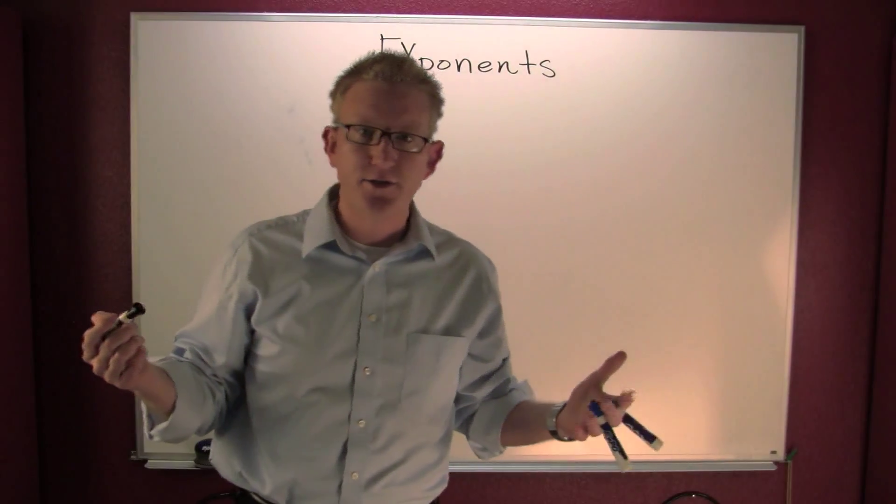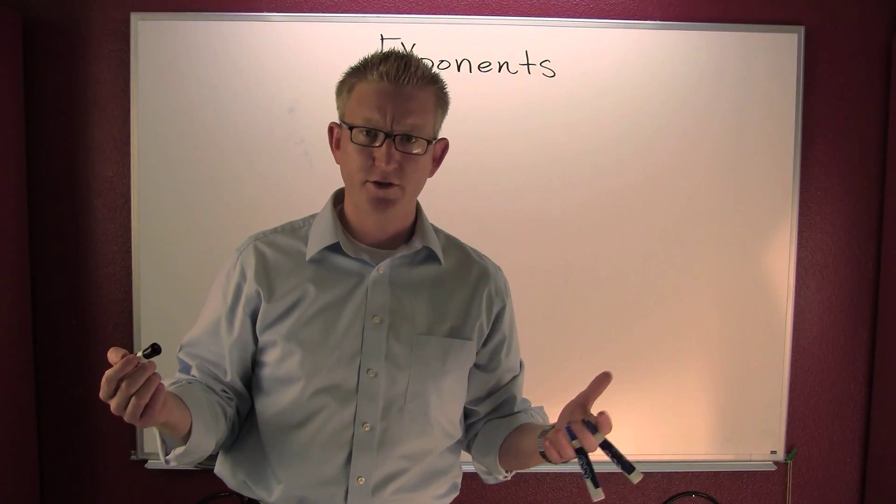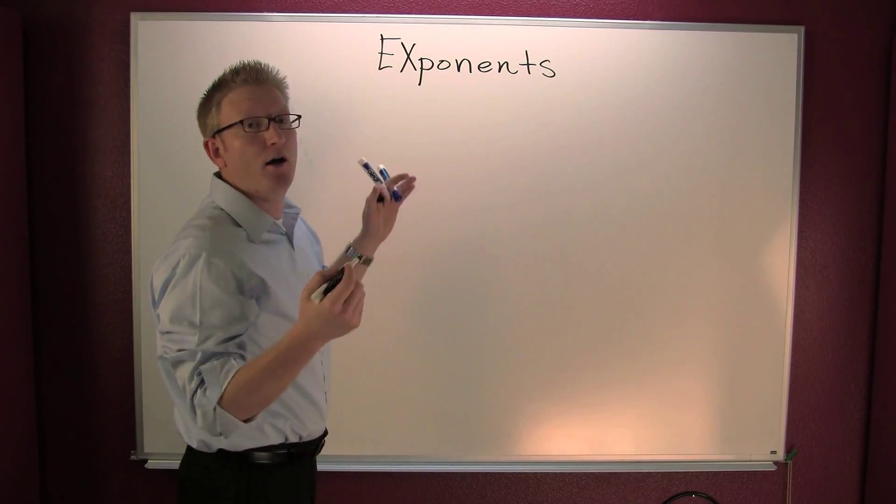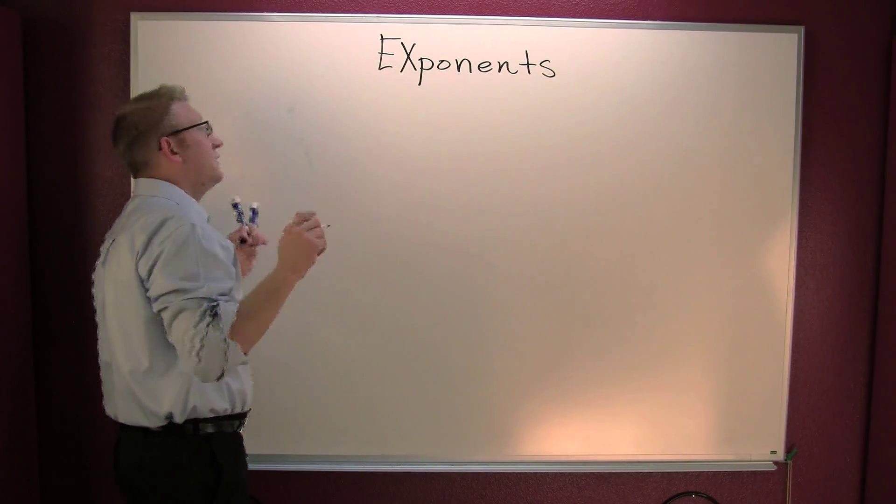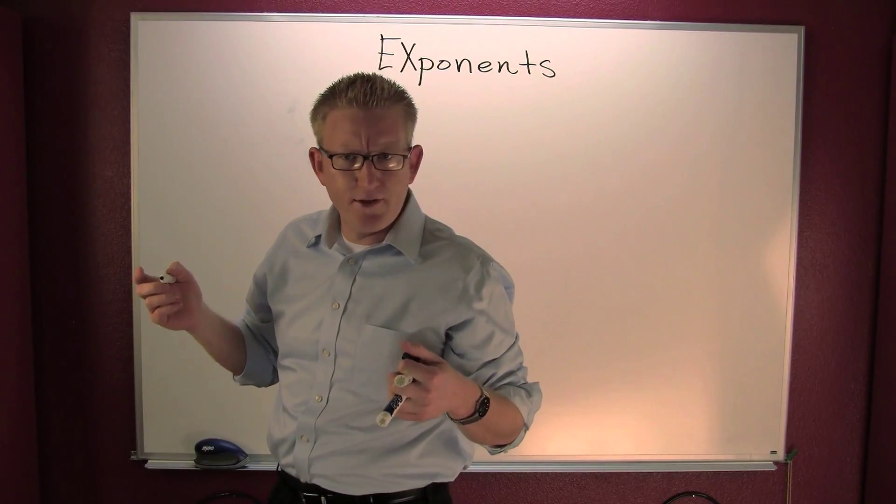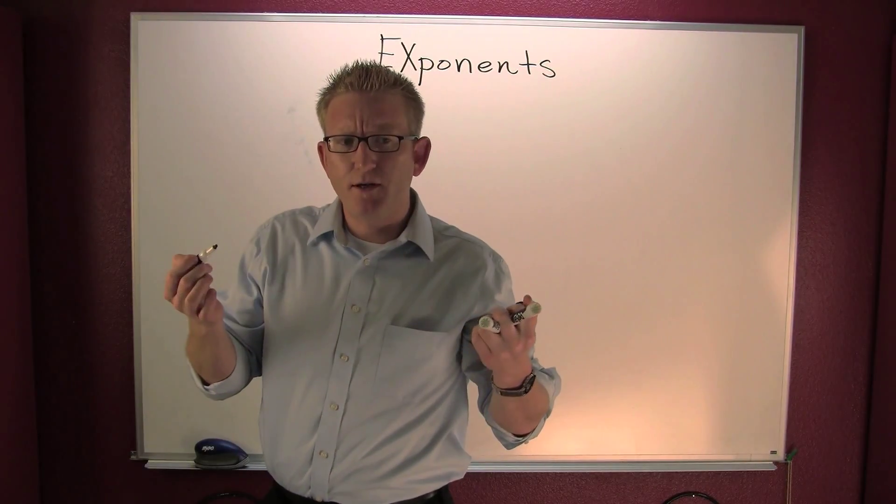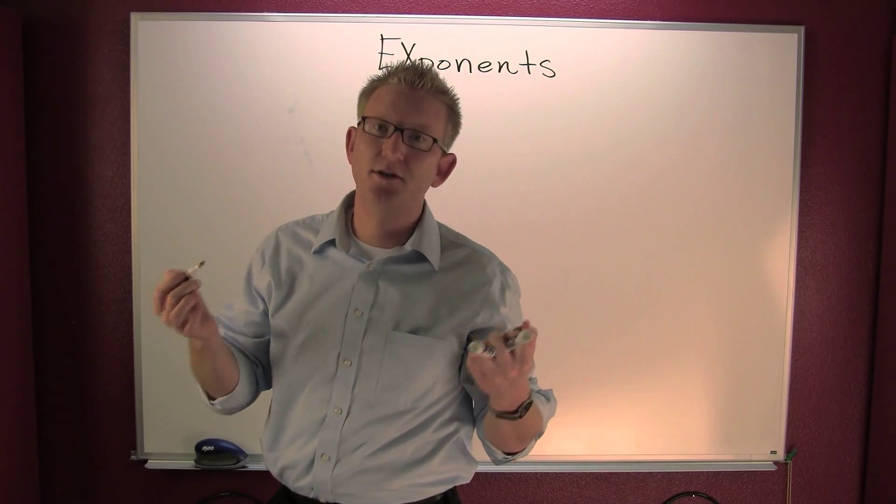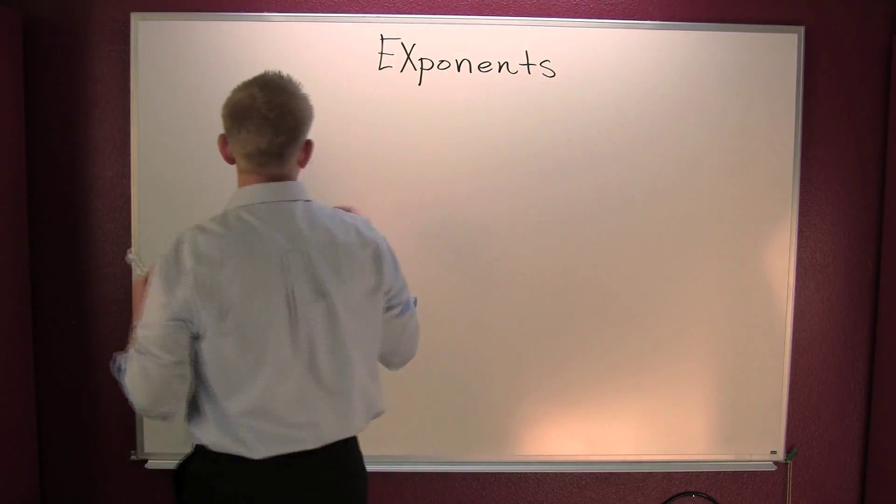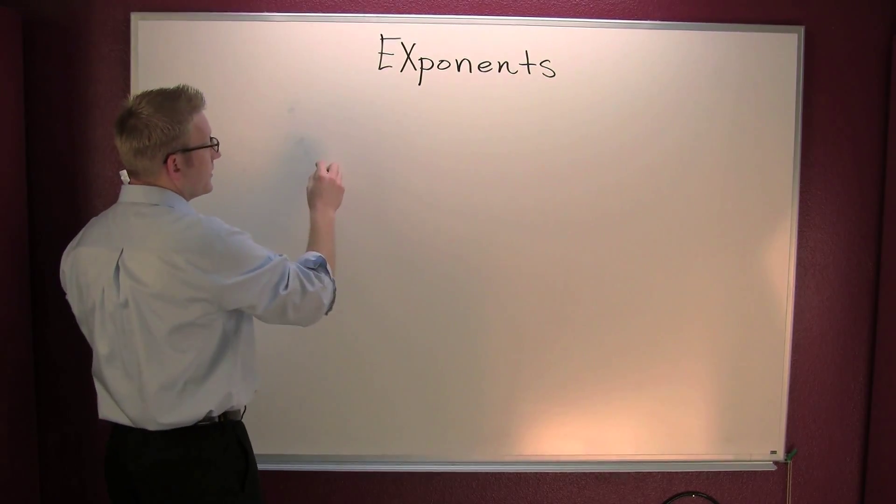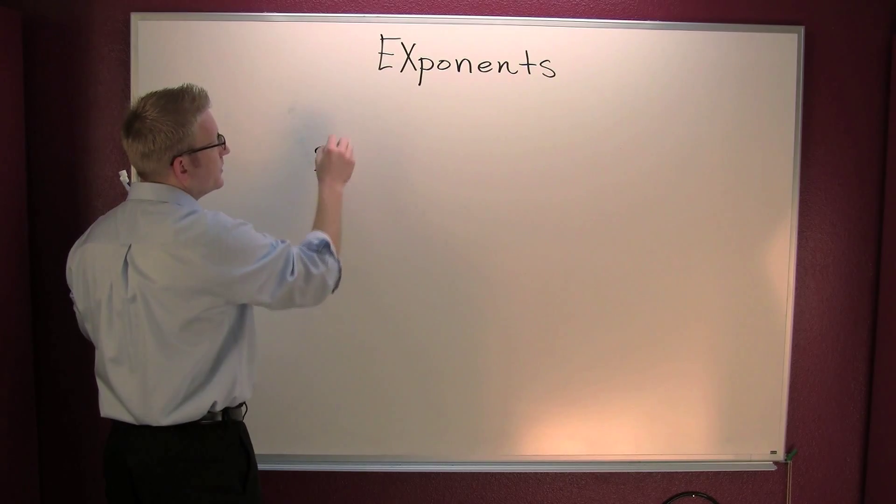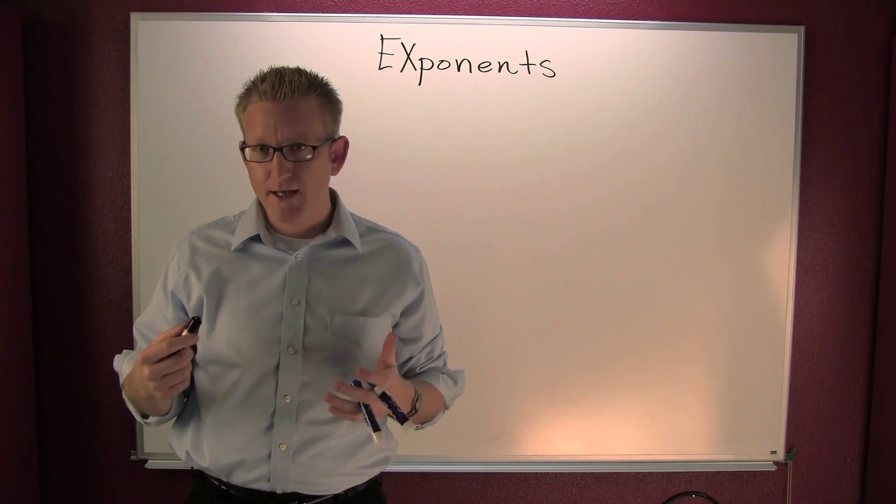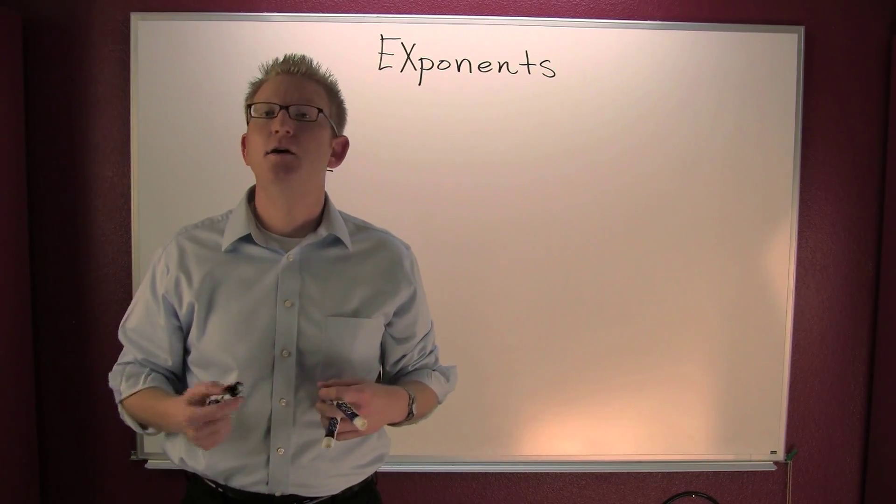Okay, so now let's get into exponents. For this talk, we need to keep it with whole number exponents. So if we had something that looked like two to the third power, what these exponents are is shorthand notation for repeated multiplication.